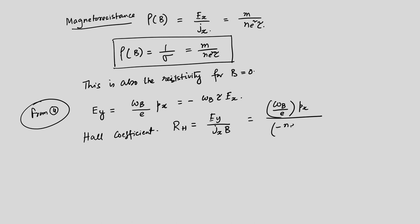Simplifying the Hall coefficient: substituting ω_B = eB/m, we get R_H = −(eB/m)·(M)/(ne²B). The p_x terms cancel, and this gives R_H = −1/(ne). In magnitude, |R_H| = 1/(ne), which is the result usually obtained in the lab.